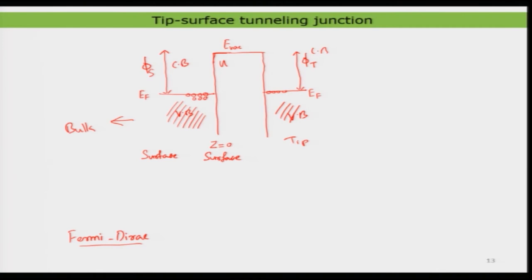Since electrons are quantum mechanical particles defined by a wave function, there is a certain probability for electrons in the surface to also be present in the tip, and vice versa. If I depict a small sine wave representing the electron at a given energy, it decays out of the surface and has a finite presence inside the tip. The same thing happens in the other direction — electrons on the tip side can also tunnel back.